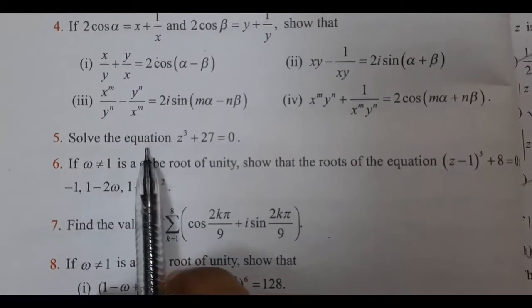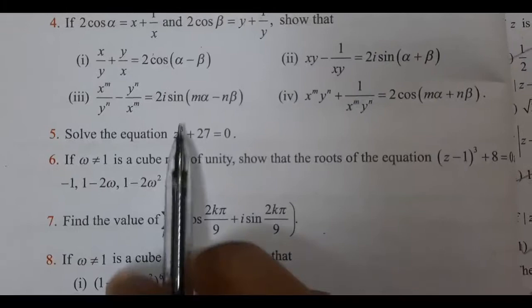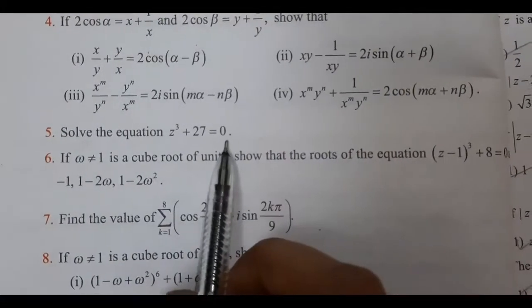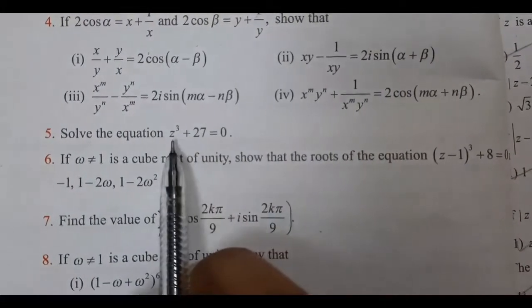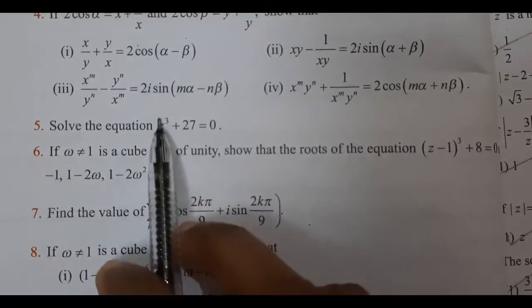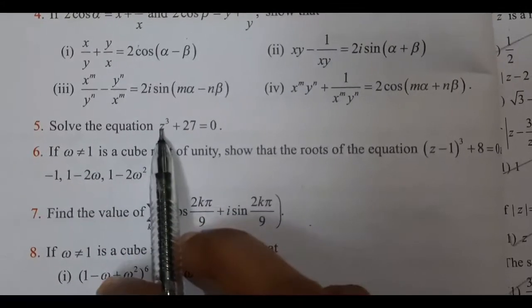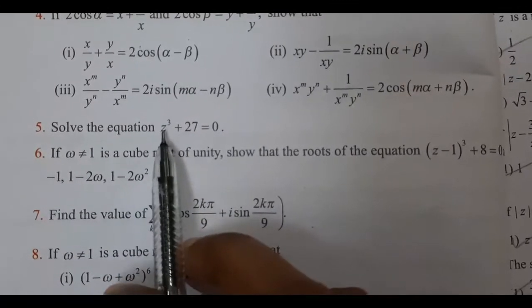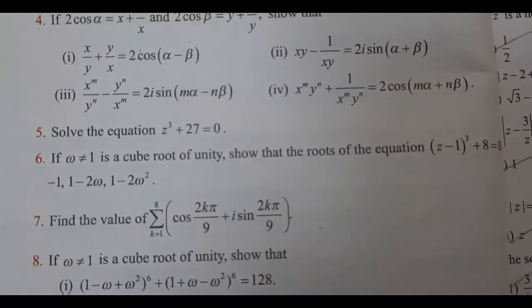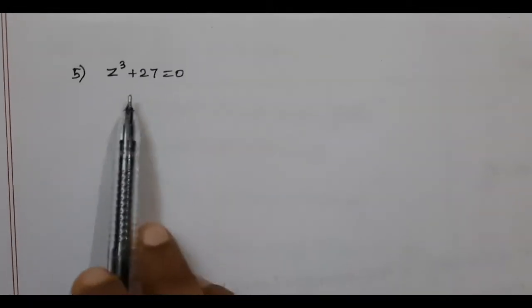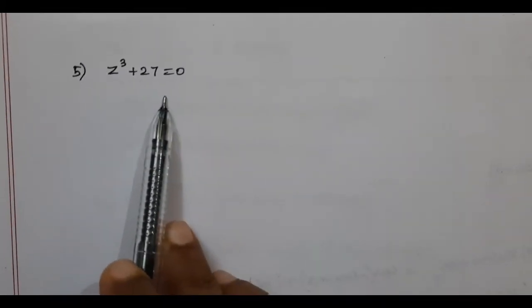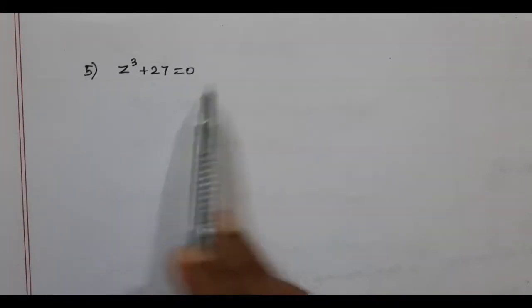Q5. Solve the equation z³ + 27 = 0. We need to find the variable — find z. The given equation is z³ + 27 = 0.